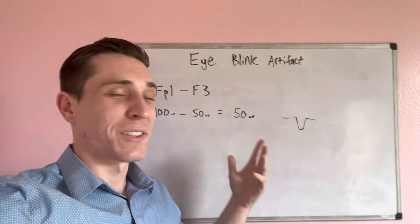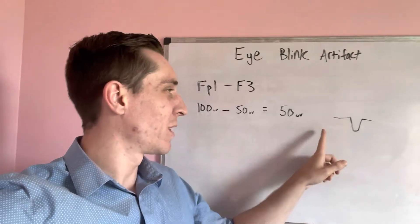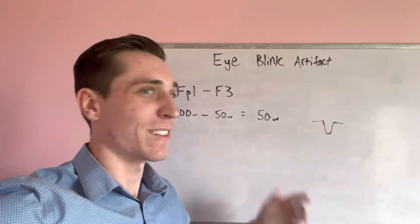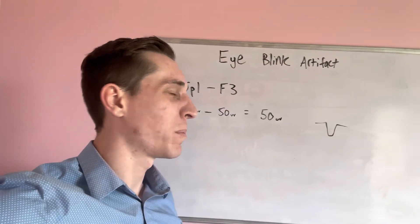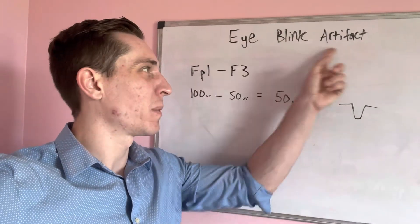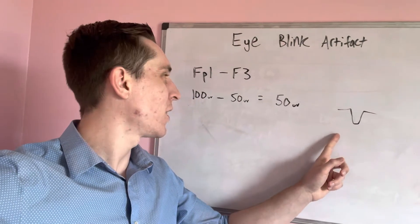I should have noticed it earlier. I obviously haven't been looking through enough EEGs or specifically looking at eye blink artifacts. I hope it makes more sense of eye blink artifacts, why they're shaped the way they are. Let me go over it again.